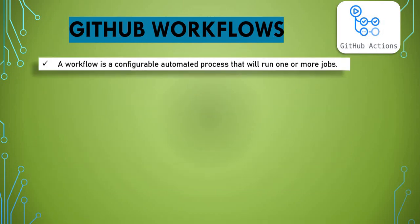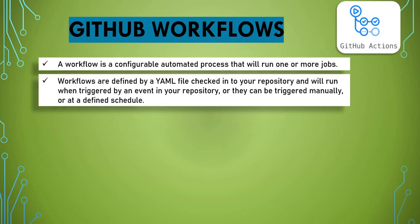Let's talk about GitHub workflows — the main concept of GitHub Actions. A workflow is a configurable automated process that will run one or more jobs. We configure the workflow in YAML format, and it is checked into our Git repository. A workflow can be triggered by an event in your repository, triggered manually, or defined on a schedule.